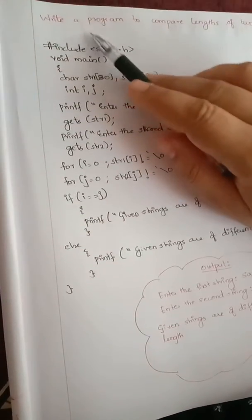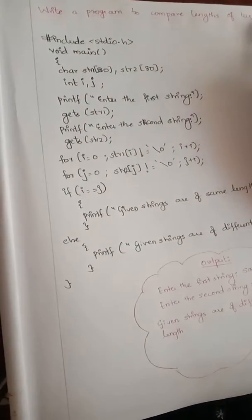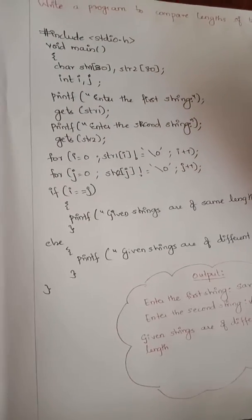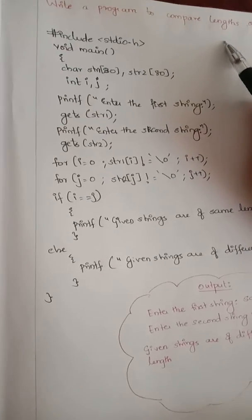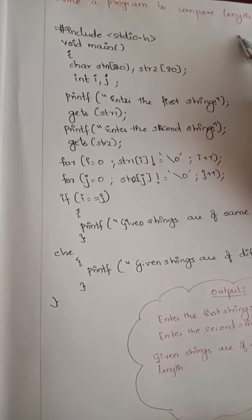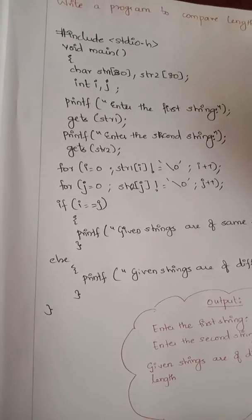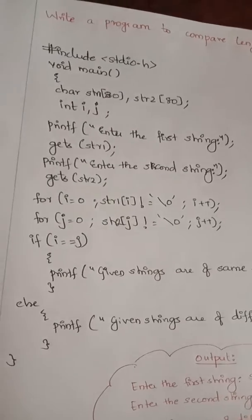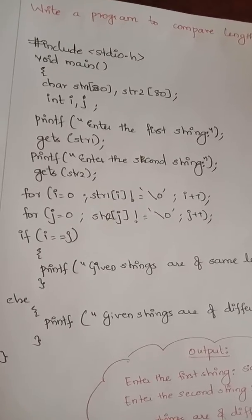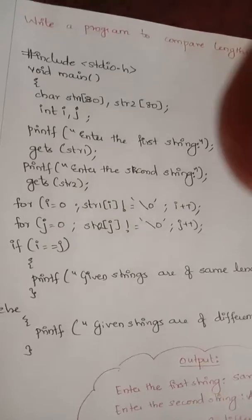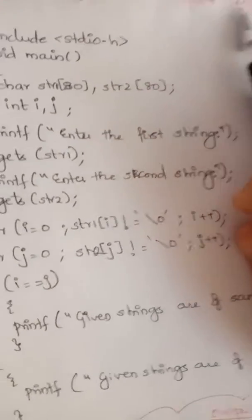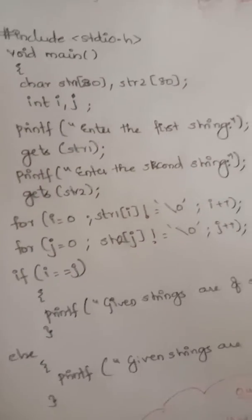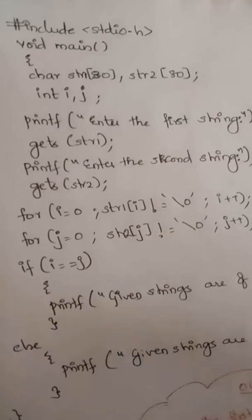Hi students, today we are going to write a program to compare the lengths of two strings. For example, if one string is 'anu' and the other is 'sai', the program should compare their lengths and output whether they are of the same length or different length. We have studied a library function called strcmp to compare two strings, but this program compares the length of two strings without using strcmp.